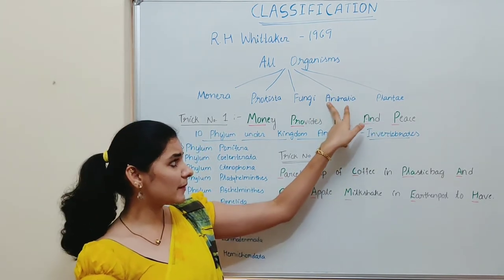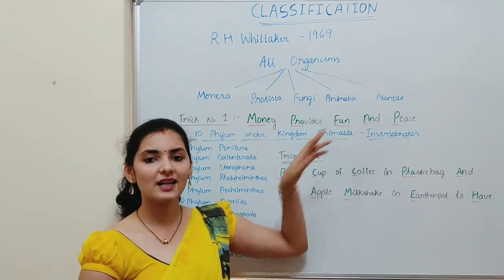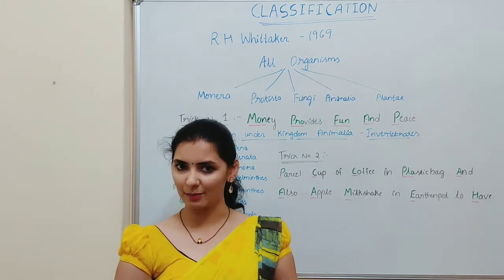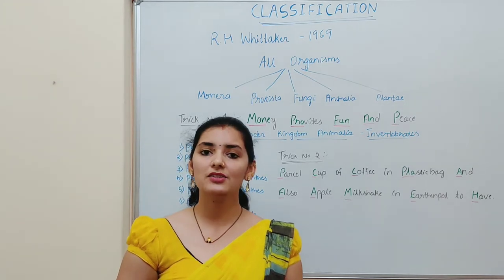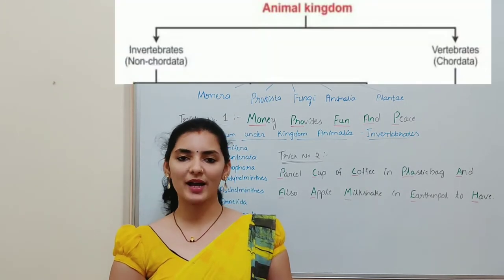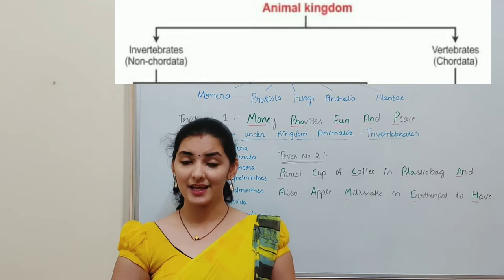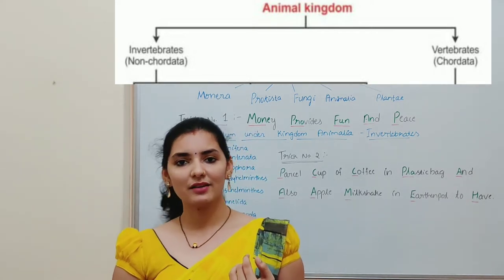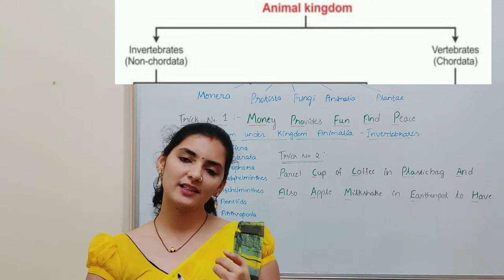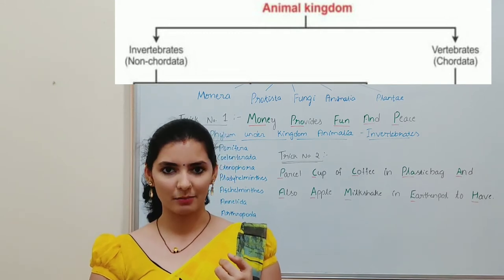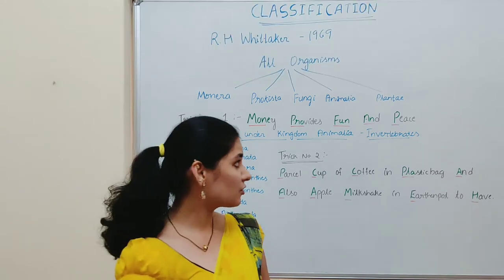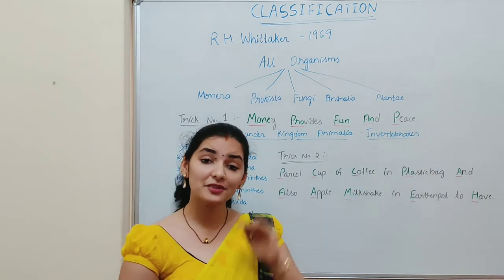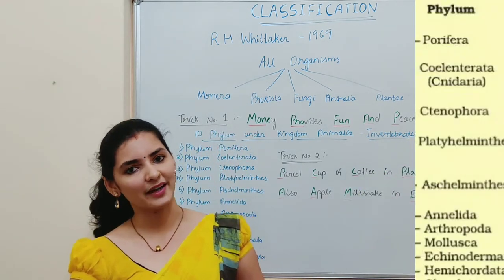If you concentrate on kingdom Animalia, it is further classified based on the presence or absence of backbone into two categories: non-chordates and chordates. Non-chordates are the ones without backbone and chordates are the ones with backbone. Non-chordates are also known as invertebrates. These invertebrates are further classified into 10 phyla.